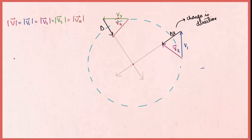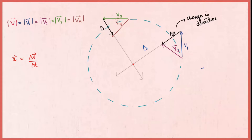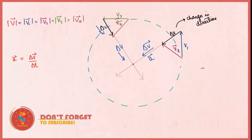As we know that acceleration is the rate of change of velocity, which means acceleration equals delta v over delta t. And as delta v is directed radially inwards, so the direction of acceleration is also radially inward.